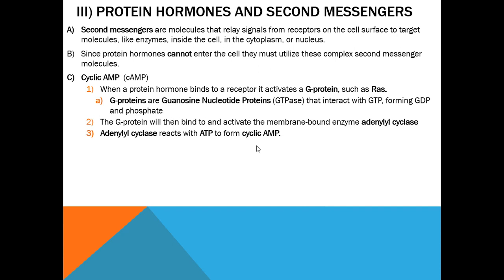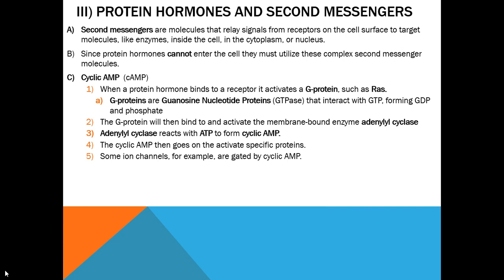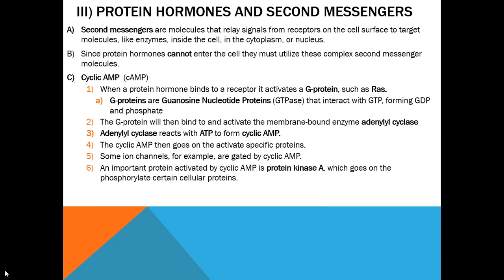Cyclic AMP is the most common second messenger. When cyclic AMP is activated, it's because a protein hormone binds to a receptor and activates a G protein. One example is a protein called RAS, found in rats. G proteins interact with GTP and make GDP — GTP is guanosine triphosphate. The G protein activates adenylyl cyclase, and adenylyl cyclase reacts with ATP to make cyclic AMP. Cyclic AMP goes on to activate other proteins, including ion channels, changing membrane permeability and activating other enzymes. Cyclic AMP is one of the most prevalent second messengers in all of our cells.